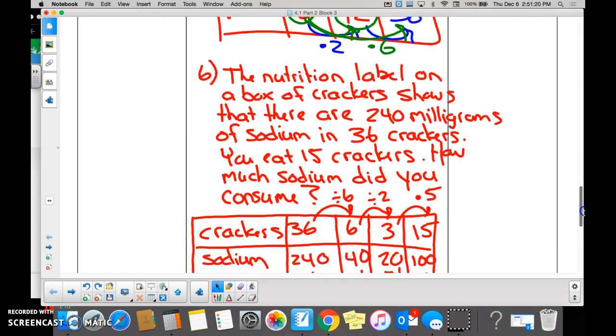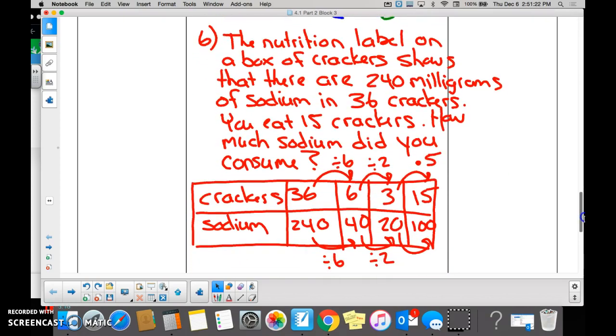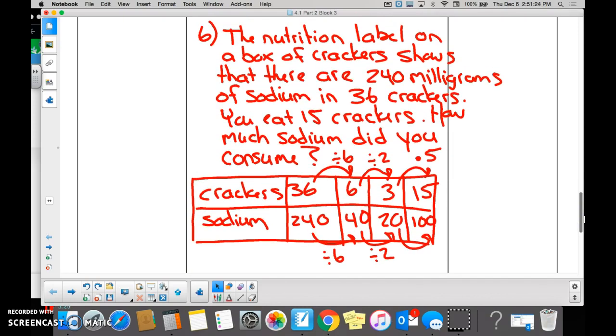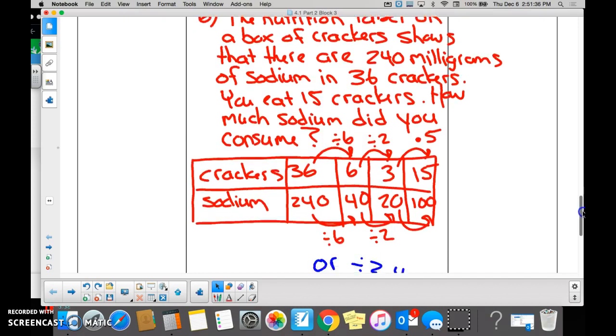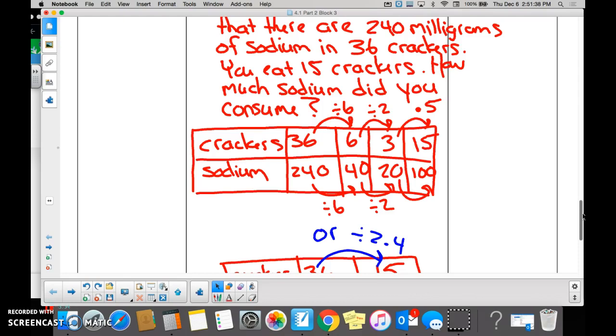This was our big problem. We gave you a box of crackers. We said that around the box of crackers, there are 36 crackers. For every 36 crackers you eat, 240 milligrams of sodium are ingested. How much sodium is ingested if you eat 15 crackers? So we started off with 36 crackers, 240 milligrams of sodium, right?